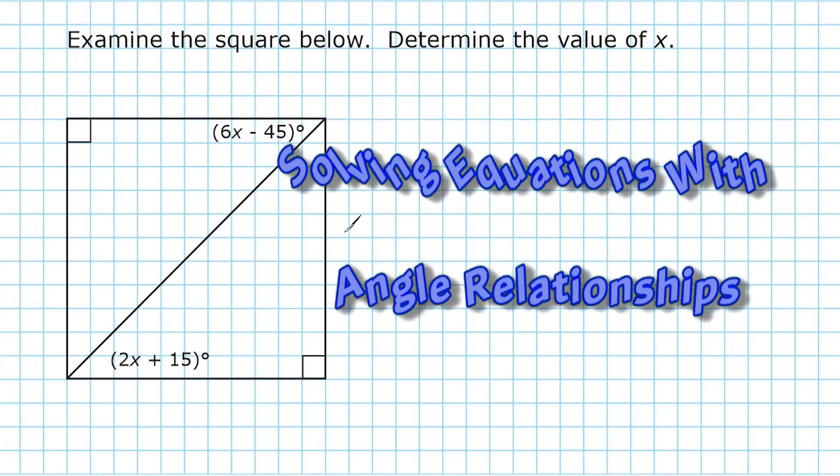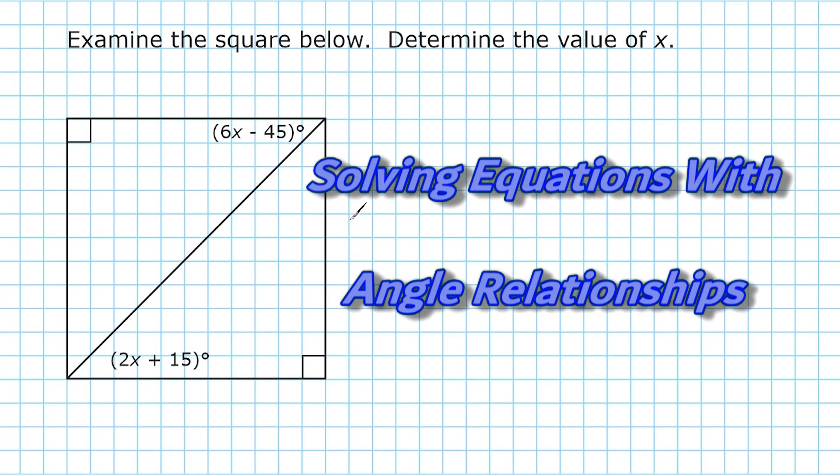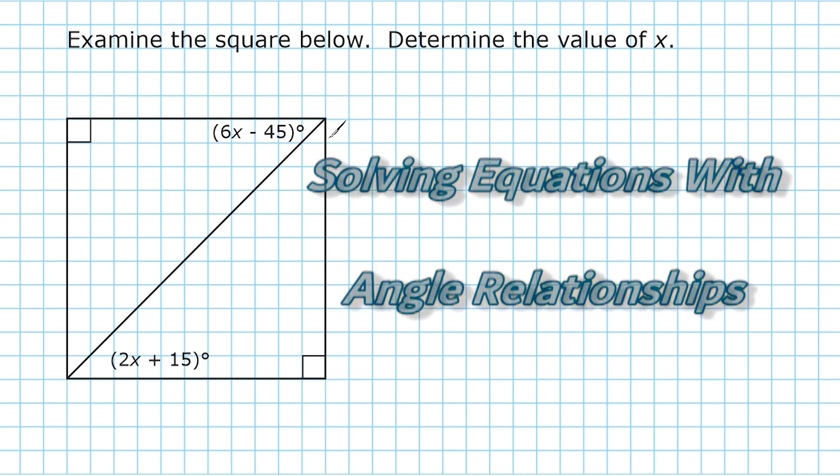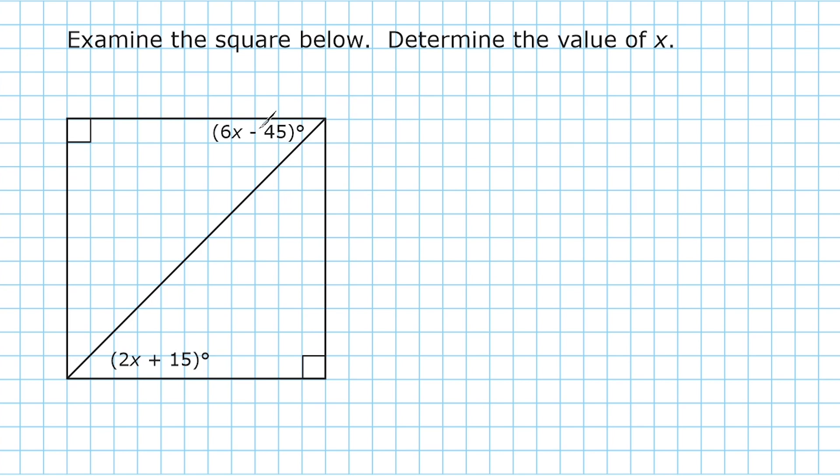All right, what we have here is a square, and inside that square, we have a diagonal cutting the square in half, and nested in this angle right here, we have an expression 6x minus 45 degrees, and down here, it says that this angle is 2x plus 15 degrees, and we have to use this information to determine the value of x.